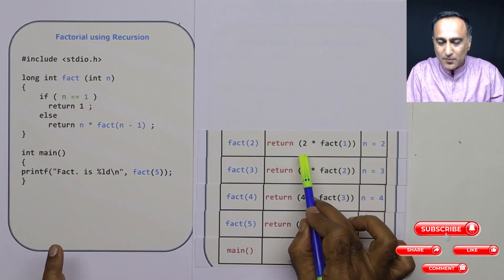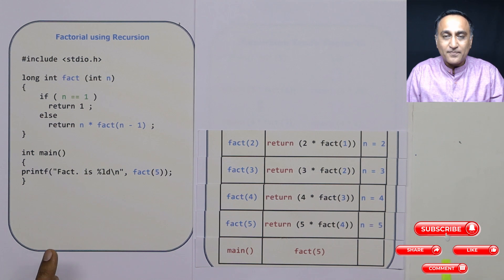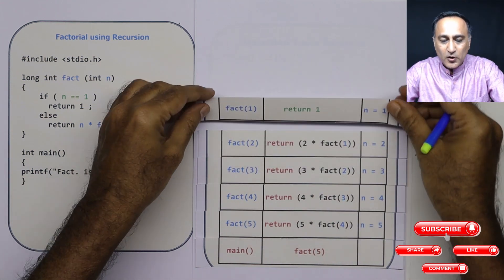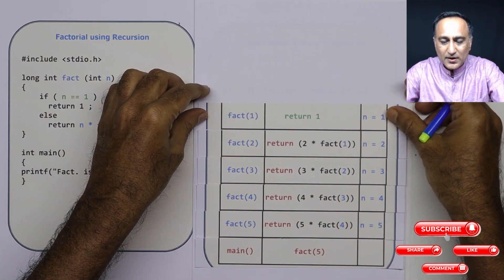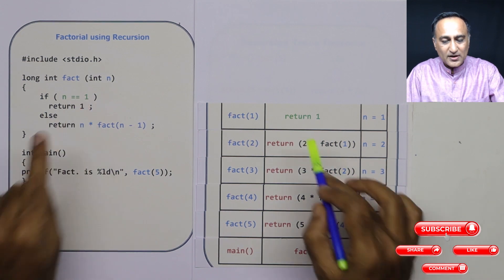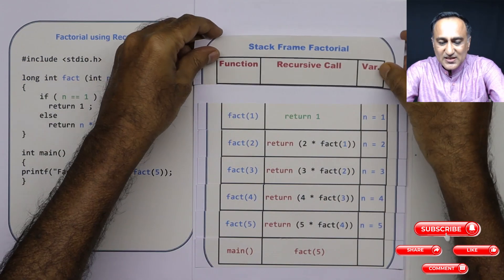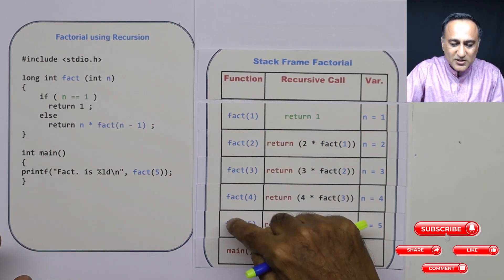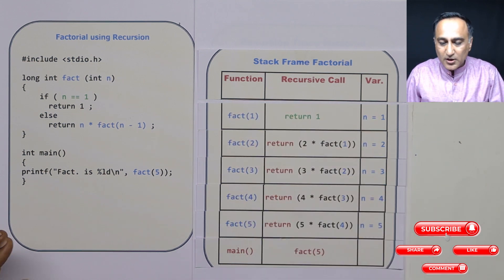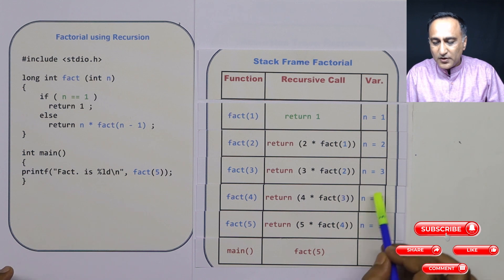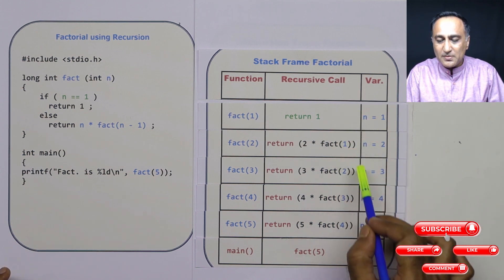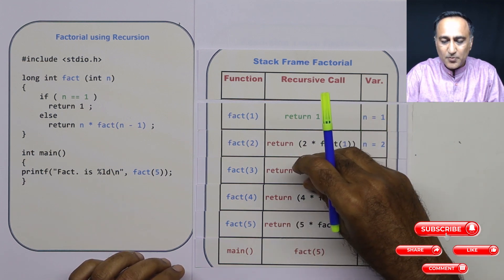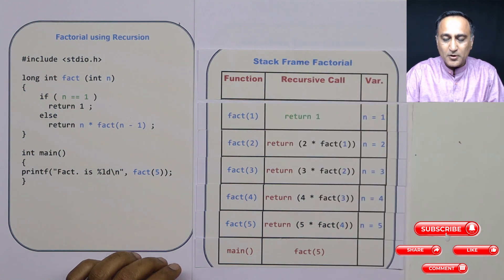2 equal to 1 is false, so I am returning 2 into factorial of 1. I still do not know factorial of 1, so I call the function factorial of 1. When fact is called with 1, an interesting thing happens: 1 is equal to 1, so a return happens. In this column I am showing you the sequence of how functions are called with different values. The value of n in each activation frame is different — you can think of this as the 1st, 2nd, 3rd, 4th, and 5th copy of the factorial function.